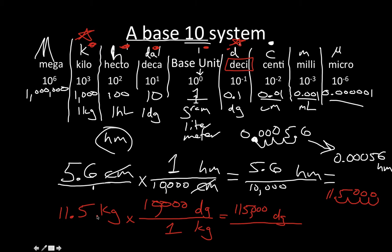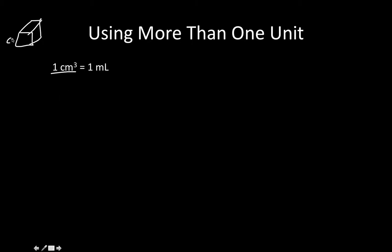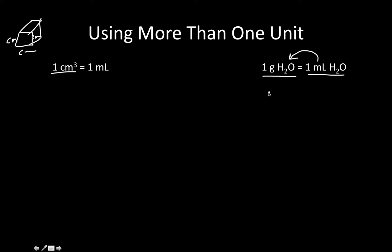If you can do those two basic questions, you'll get them right on the quiz. For the last question, there's a math problem using more than one unit. We know that one centimeter cubed — a cube of one centimeter by one centimeter by one centimeter — equals one milliliter. We also know that one milliliter of water has a mass of one gram.